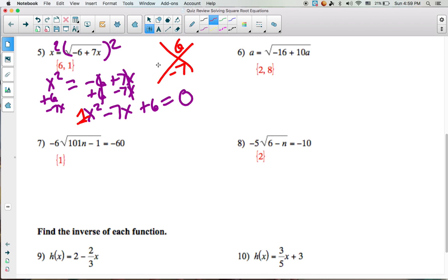Those numbers would be negative 6 and negative 1. Negative 6 times negative 1 is positive 6. Negative 6 plus negative 1 is negative 7. So our factors are x minus 6 and x minus 1.